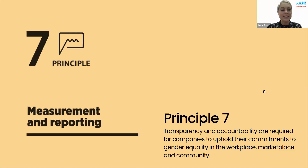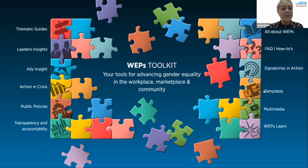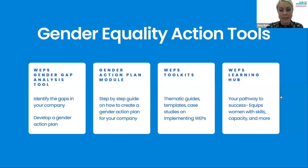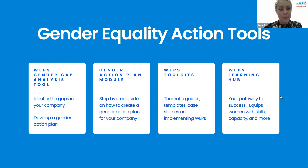That's a brief recap of the WEPs. As existing or new WEP signatories, what can you do with all of this? We really wanted to present the WEPs toolkit. All of this can be found through WEPs.org — the global platform or portal — where we have a whole host of resources to help you advance across these different pillars. A few key gender equality action tools: the WEPs Gender Gap Analysis Tool, which is housed on the UN Global Compact website. WEPs is a joint initiative with UN Women and UN Global Compact.